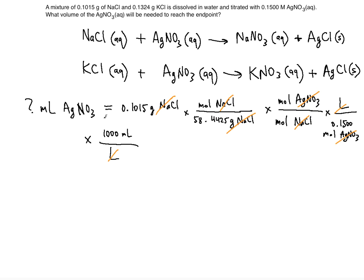Keep in mind that this answer accounts only for the first reaction. You need to combine it with the volume of silver nitrate required for the second reaction as well. If you do this in your calculator — dividing by 58.4425 and then by 0.1500 — you get a partial answer in liters. You must add the result from the second reaction, so mark a plus sign here.